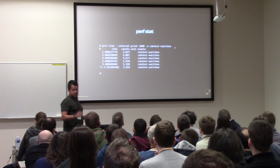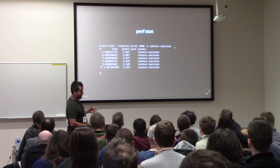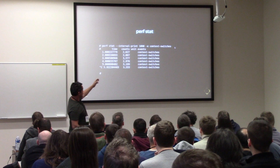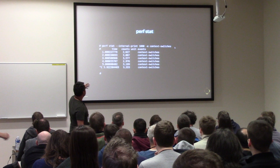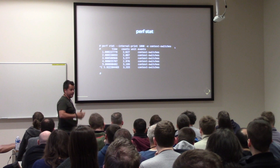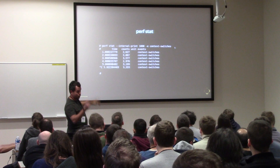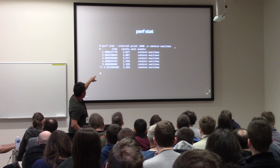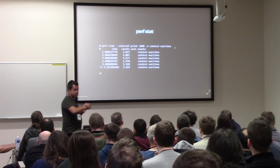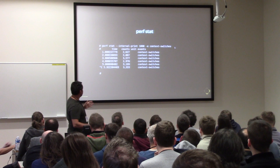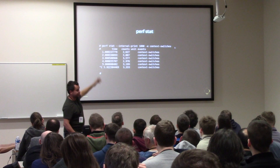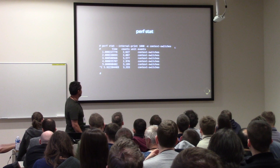Perf stat is the first thing you use with Perf — it just counts things. In this case I'm counting context switches on the whole system. I haven't specified any workload, so it infers you want information about the whole system. There's this interval print, equivalent to vmstat, printing every one second showing the count and the event. You could specify context switches together with several other events like cache misses or CPU instructions — it would count those in the last second or whatever interval you use.